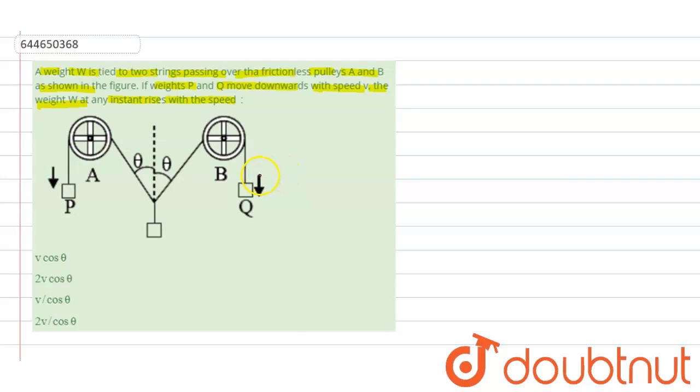Here it is written that the body Q is moving downward with a speed v. So that means this string moves in this direction with a speed v. Similarly, P moves downward with speed v. So this string will move in this direction with speed v.